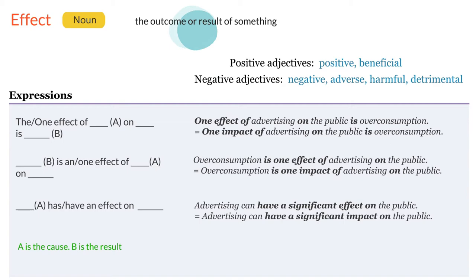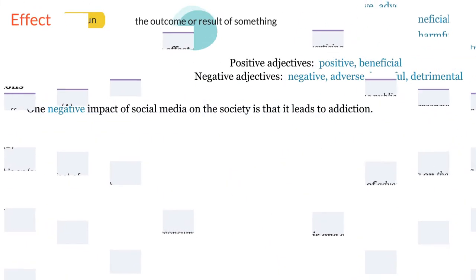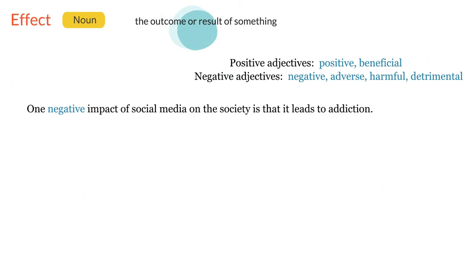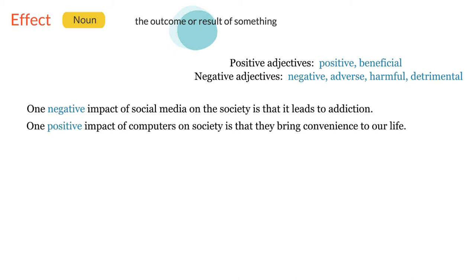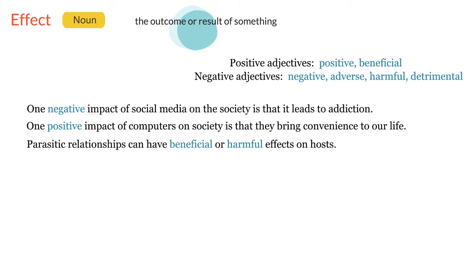Let's look at the following examples. One negative impact of social media on society is that it leads to addiction. One positive impact of computers on society is that they bring convenience to our life. Parasitic relationships can have beneficial or harmful effects on hosts.